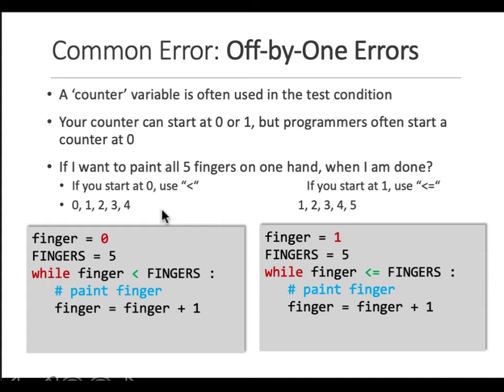These are off-by-one errors because either you can start at zero and use less than, or you have to use less than or equal to. Depending on your programming condition, you should figure out whether you want to use less than or equal to, or just less than.